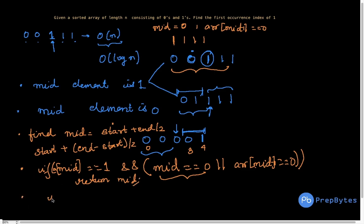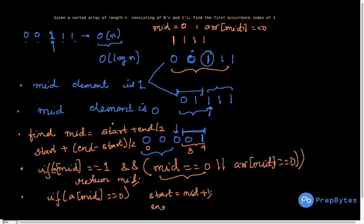If that condition is not true, we have another case: if a[mid] equals 0, we search in the second half — we update start to mid plus 1 and end stays the same. If neither condition is true, the only remaining situation is that a[mid] equals 1 but is not the first occurrence — we search in the first half, so we update end to mid minus 1 and start remains as is.